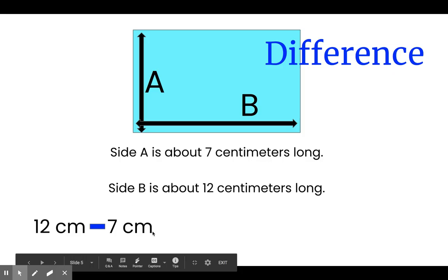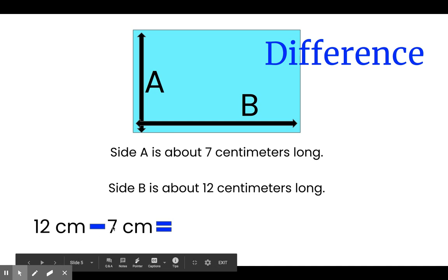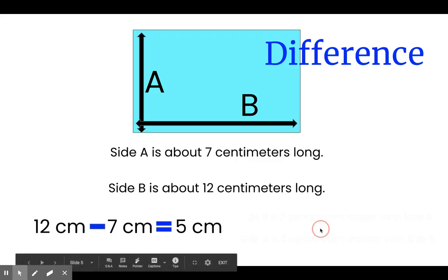Now, we need to solve this. 12 subtract 7 equals? That's right. You got it. 5 centimeters. So we can say again, side B is 5 centimeters longer than side A. Or we could say, side A is 5 centimeters shorter than side B. We found the difference. The difference was 5 centimeters.